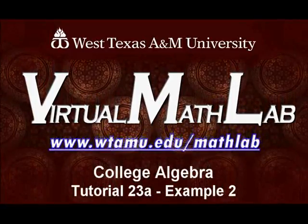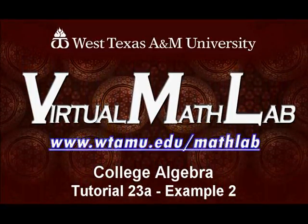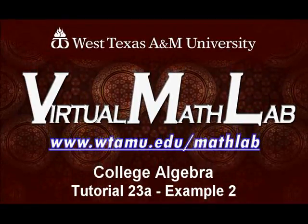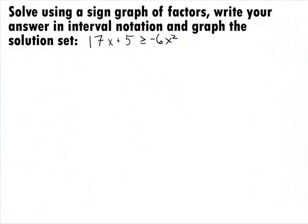Hi, welcome to the WTAMU Virtual Math Lab. This video will step you through College Algebra Tutorial 23A Example 2. In this example, we want to solve the quadratic inequality 17x plus 5 is greater than or equal to negative 6x squared by using the sign graph of factors, write our answer in interval notation, and graph the solution.